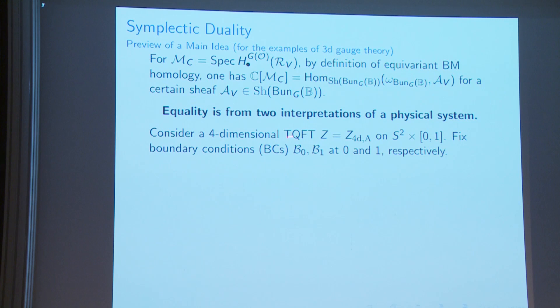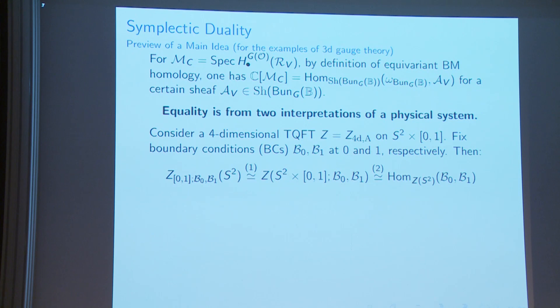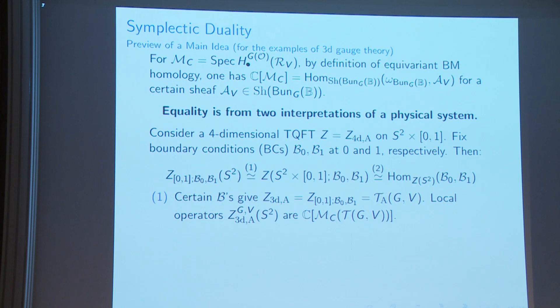You can think of this 4D TQFT as a version of a twist of 4D N=4 theory. What you assign to S^2 times the interval can be read in two different ways — compactifying along the interval with two boundary conditions giving a 3D theory, or thinking of the S^2 direction to get a category of line operators. The first interpretation gives the Coulomb branch algebra; the second gives the sheaf-theoretic description.